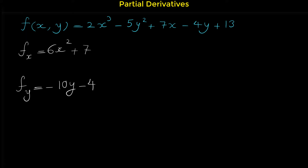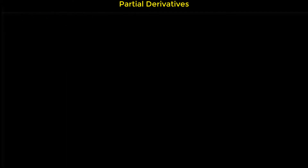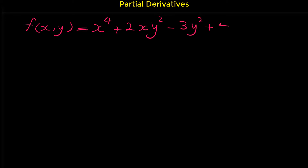Let me show you another example. Consider the function f of x and y equals x⁴ plus 2xy² minus 3y² plus 4. We want to find the partial derivative of f with respect to x and with respect to y. The derivative of x⁴ using the power rule is 4x³.